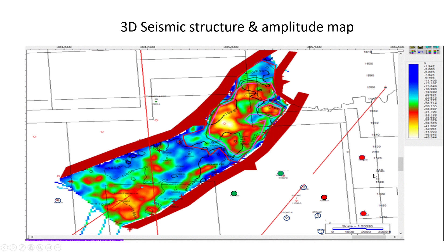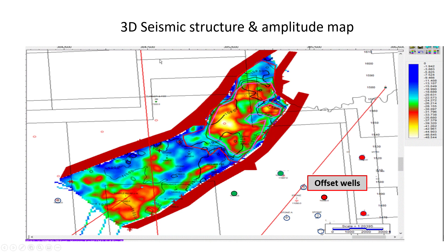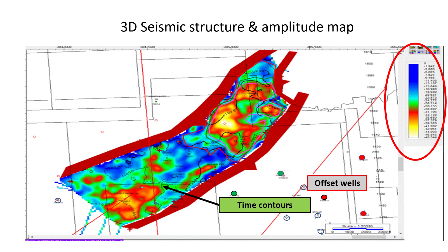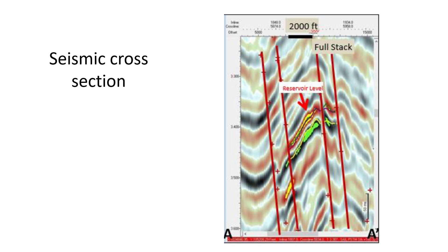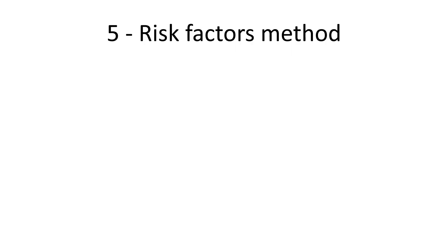Here's a sample prospect on a 3D seismic structure map. There's a lot of data: we have a prospect in the northeast corner, offset wells with logs and production data, time contours from the seismic data showing where the high areas of the reservoir are, seismic amplitude with brightness and colors as direct hydrocarbon indicators, our prospect marked with a black star, and a producing well to the southwest. We could also have a seismic cross-section showing where the prospect will be drilled on that high area.